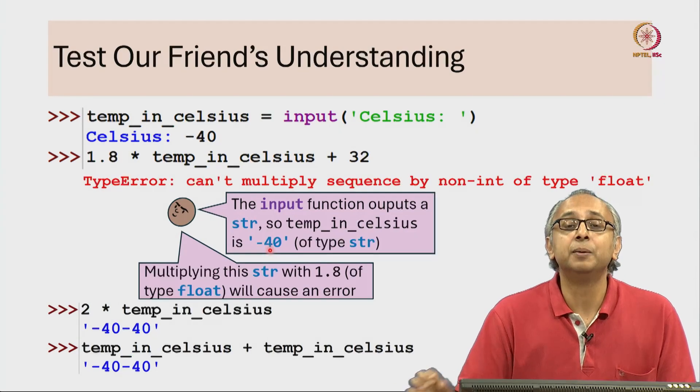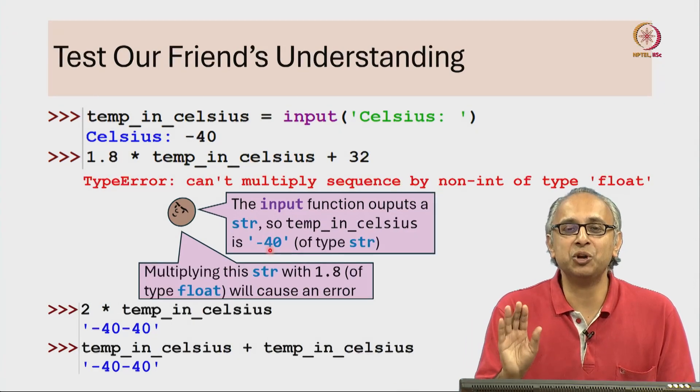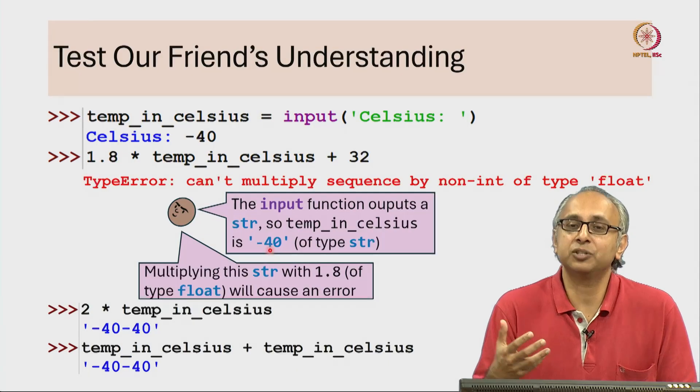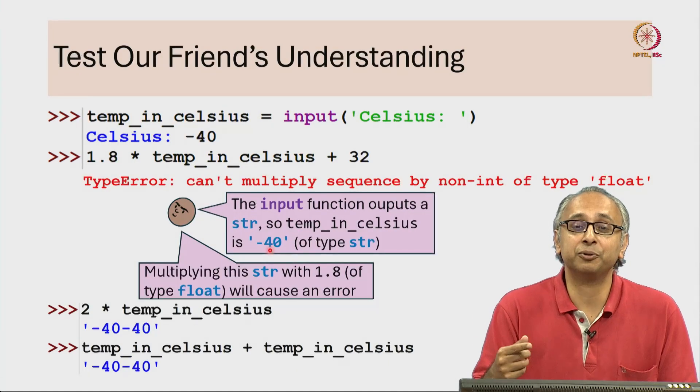So this object is of type str, but temp_in_celsius is not really of type str - it's just a variable, and variables don't have types.